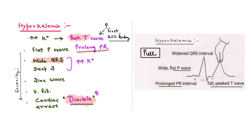Ultimately, with increasing severity of hyperkalemia, you will see a sine wave pattern, ventricular fibrillation, and ultimately cardiac arrest. An MCQ may ask in which phase of the cardiac cycle cardiac arrest occurs — you must remember it is in the diastole phase. You can see in the picture that the features of hyperkalemia are tall peaked T waves, prolonged PR interval, and widened QRS. This produces a pulling effect on the ECG. One thing that is decreasing is the amplitude of P wave, leading to flattening of the P wave.